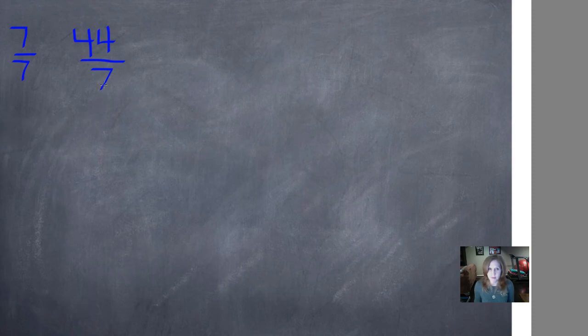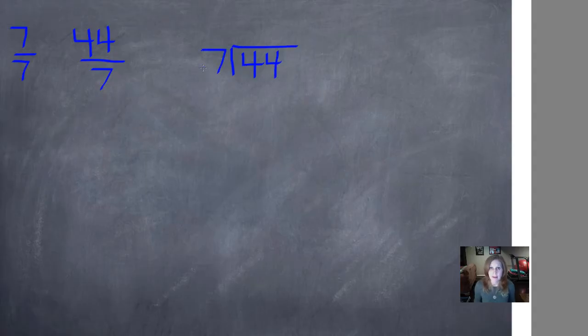So 44 sevenths is several groups of seven. We find the mixed number by dividing. And if you remember back to our original lessons, this is a division symbol and this says 44 divided by 7. So we know what to write in the house: 44 divided by 7 looks like this. 44 divided by 7. So now we're just going to work a regular division problem.